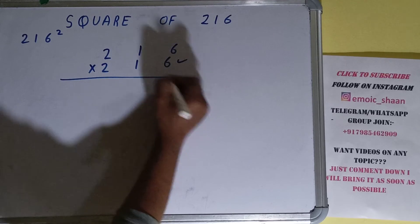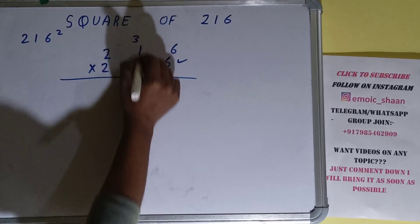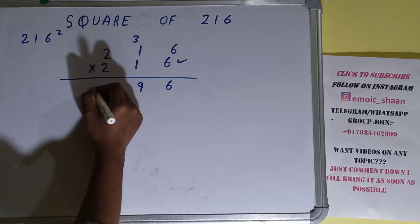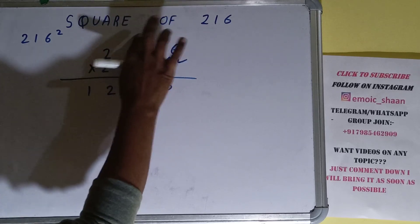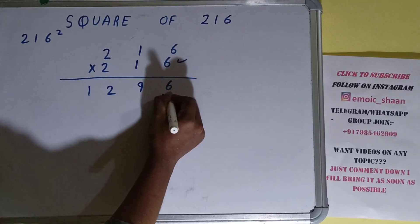So let's begin with the 6. 6 times 6 equals 36, carry 3, write 6. Then 1 times 6 is 6, plus carry 3 is 9, write it down. 6 times 2 is 12, okay.